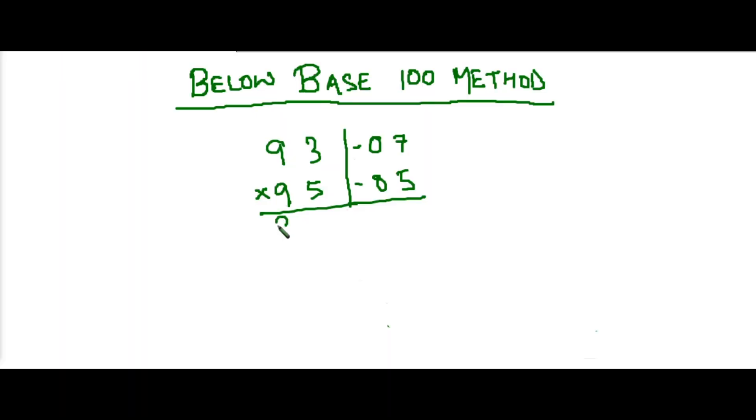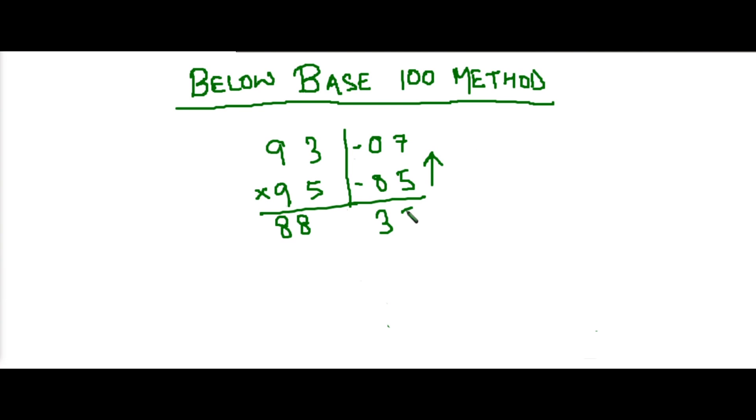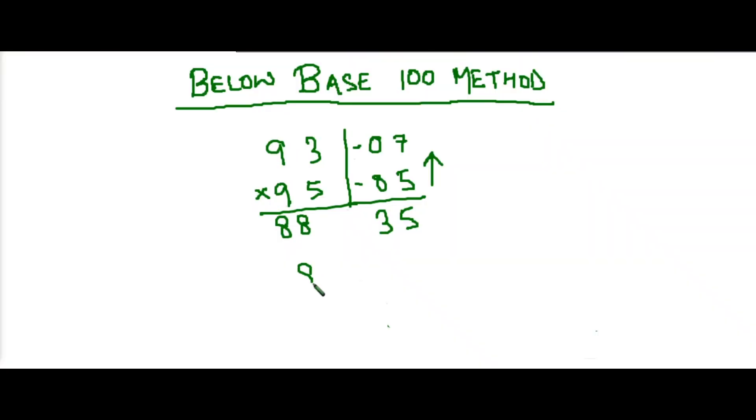Next step, cross subtract. So 93 minus 5 is how much? It's 88. The next step is to vertically multiply these two numbers which is 7 and 5. So 7 into 5 is 35. So our final answer is 8835.